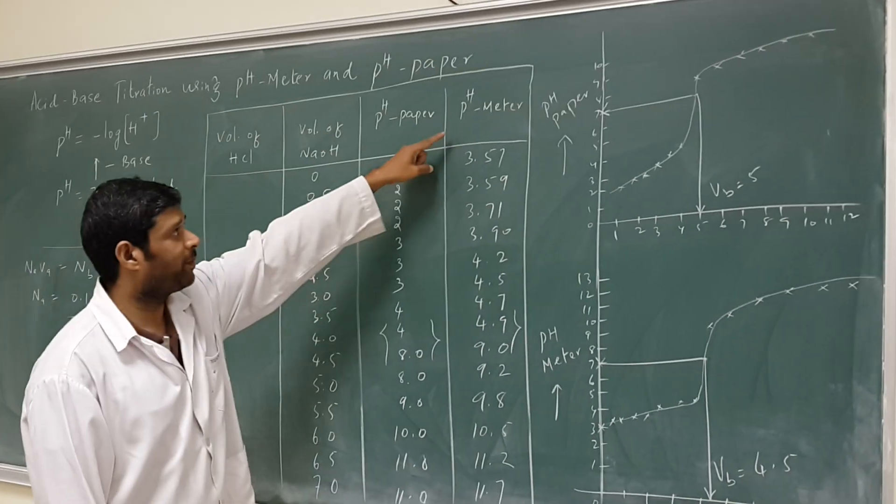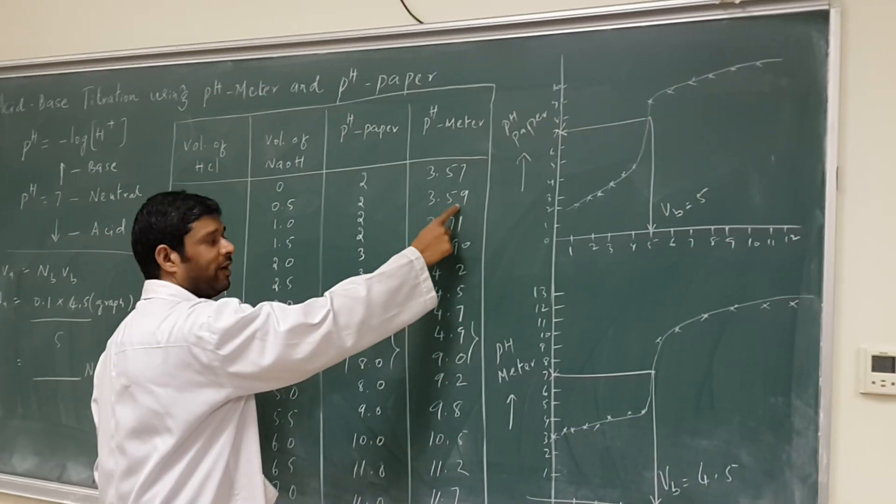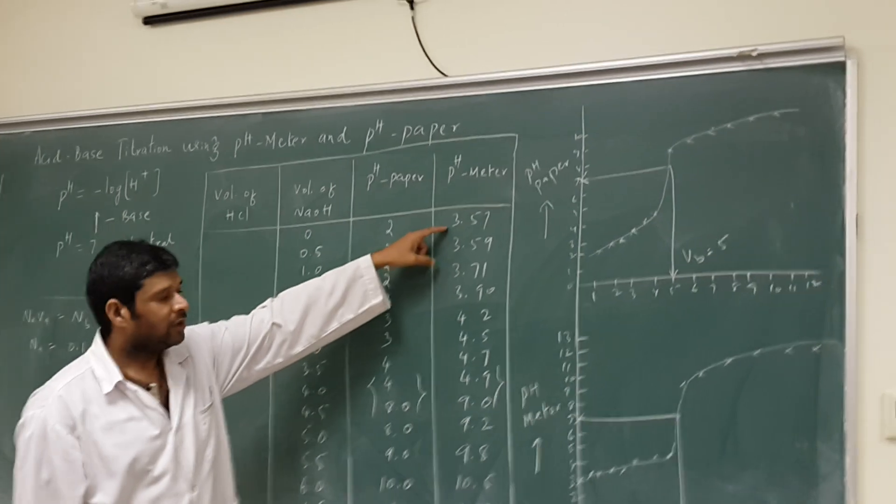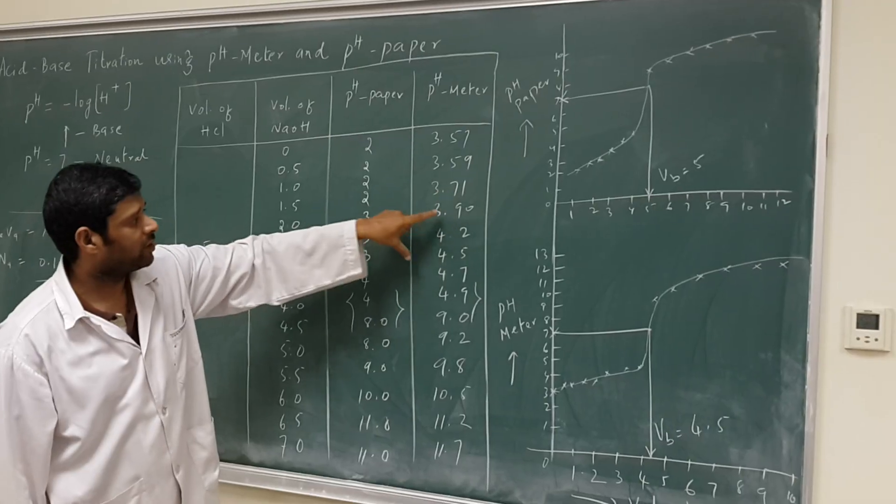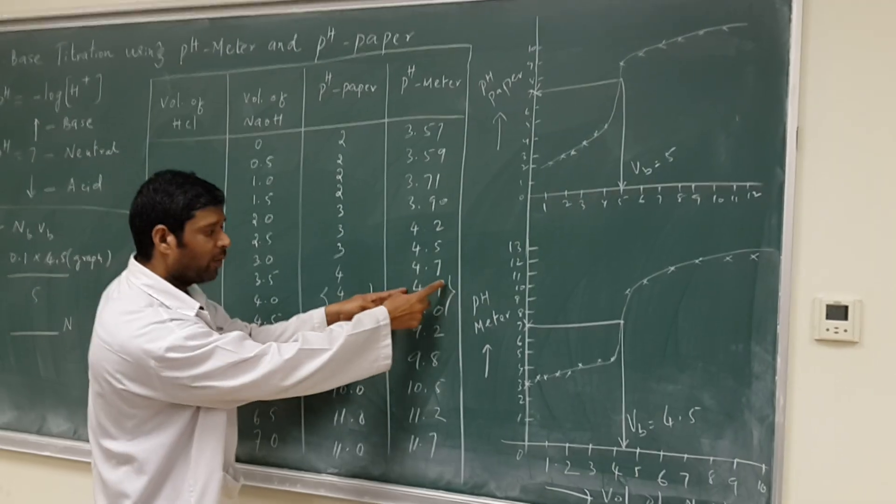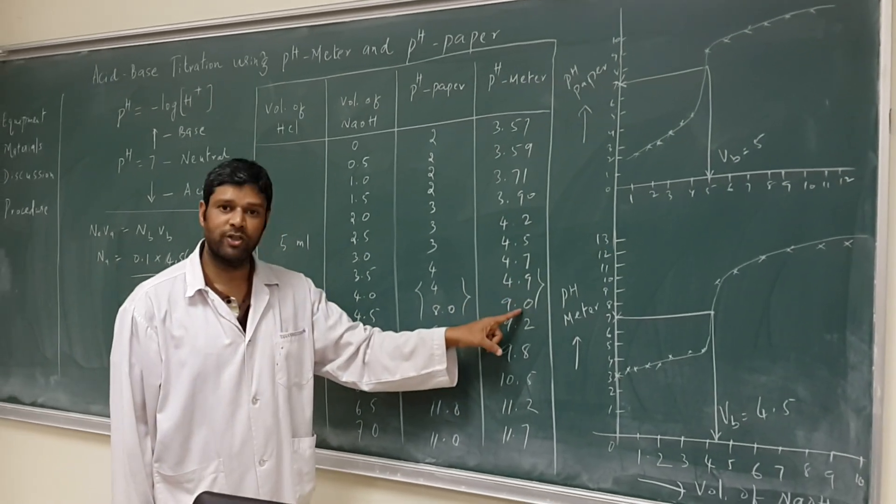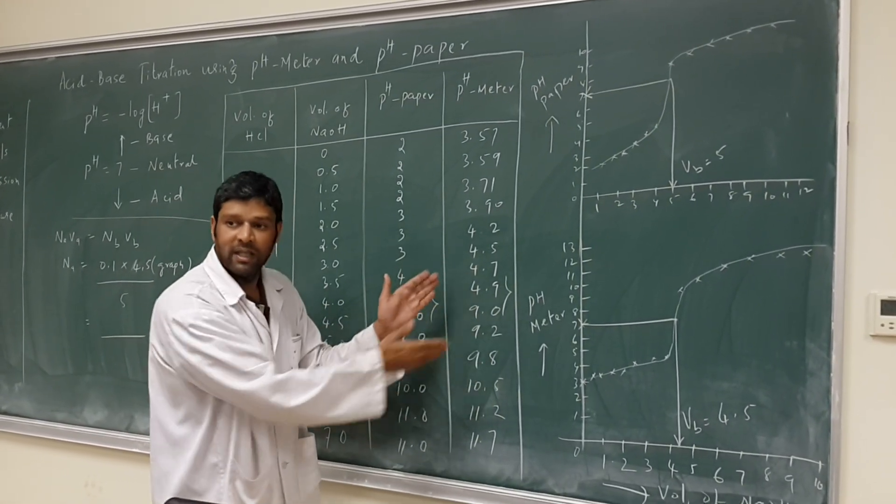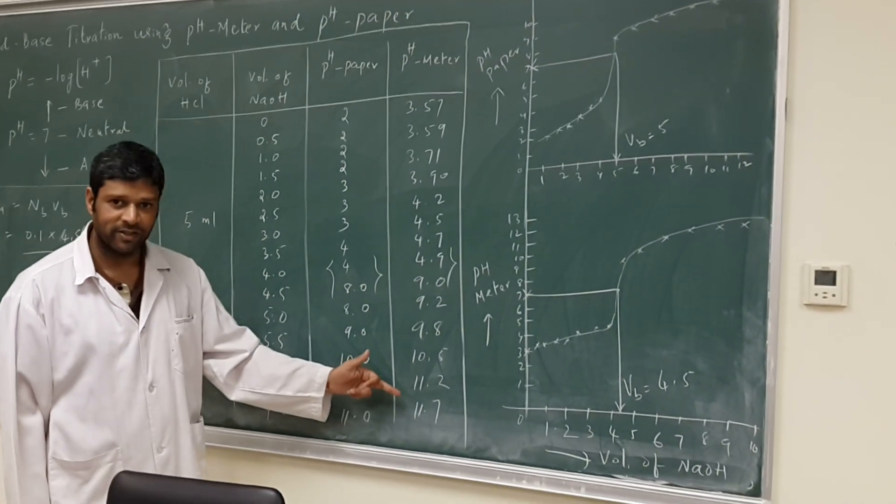For pH meter also, when you add 0.5 ml of sodium hydroxide, it will be 3.59, again 0.5 ml gives 3.79, then 7.1, like this. The values in the beginning are almost the same: 3.59, 3.71, 3.90, like this. Afterwards, after some readings, the value will suddenly change from 4.9 to 9.0. When you get a huge difference in the pH meter reading, then whatever you are doing is correct. Afterwards, almost the same unit again.